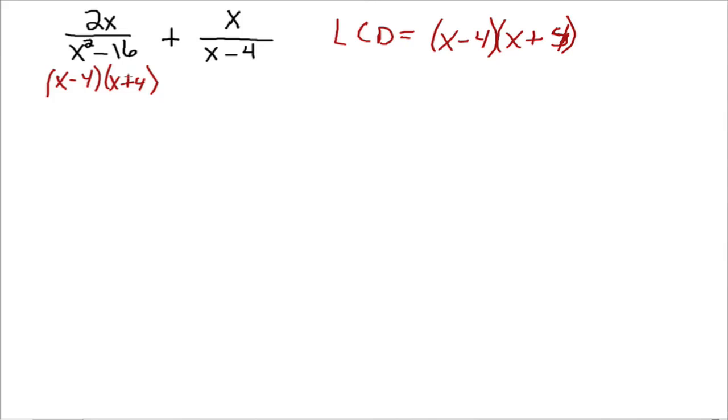The first fraction already has the common denominator, so there's nothing to do to the first fraction. We're just going to leave it as is. So, we'd have 2x over our denominator, x minus 4, x plus 4.